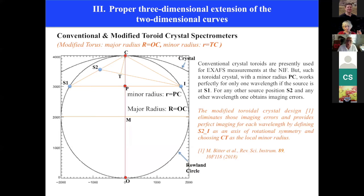But there is a way to modify the conventional torus such that we still fulfill the exact imaging conditions. For this purpose, we connect the source S2 with the image I and define that line as an axis of rotational symmetry for the ray pattern. The radius of curvature is then CT, which is the line segment perpendicular to this axis of rotational symmetry. And you again have fulfilled exactly the imaging conditions for this new source position.